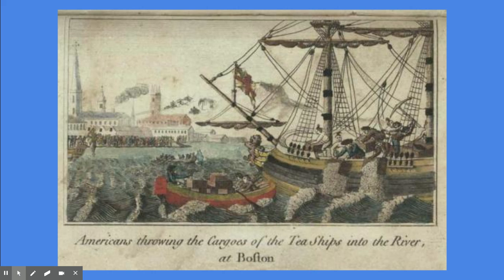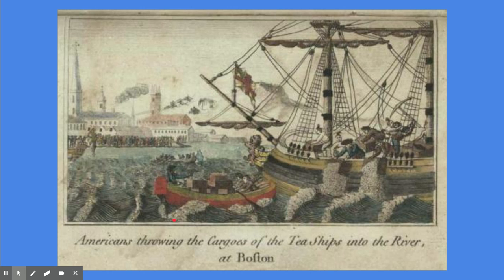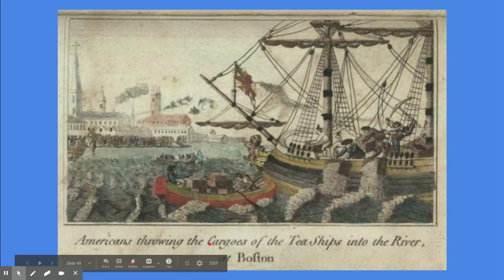So what ended up happening in December of 1773 is that the Sons of Liberty disguised themselves as Mohawk Indians. They sneaked onto these ships and dumped the tea into the harbor. You can see the crowds watching, the tea falling into the harbor, and people rowing ashore. It was described as 'Americans throwing the cargoes of the tea ships into the river at Boston.'